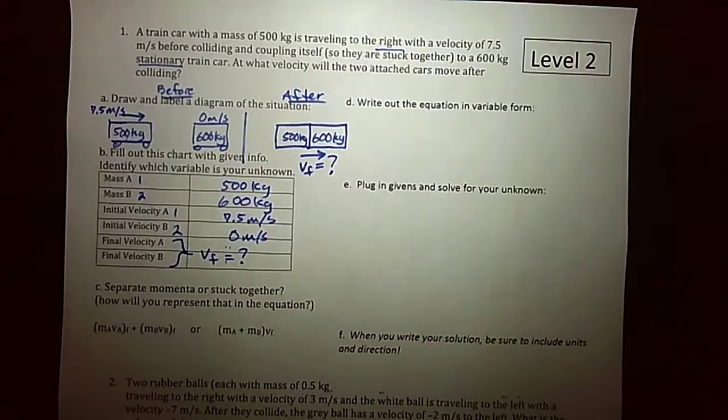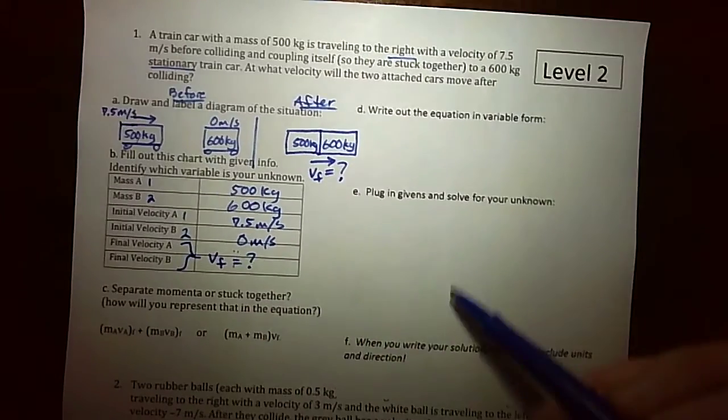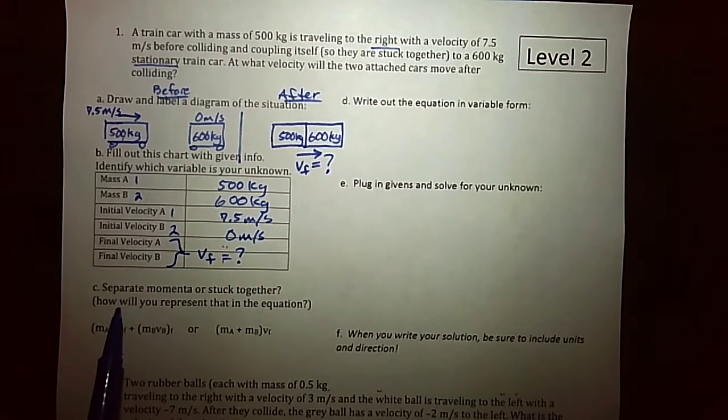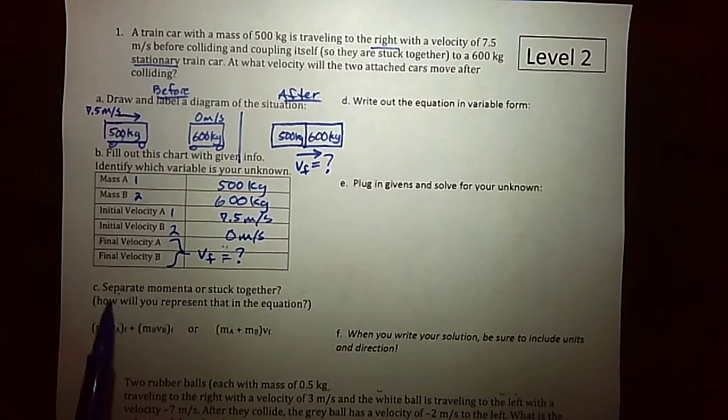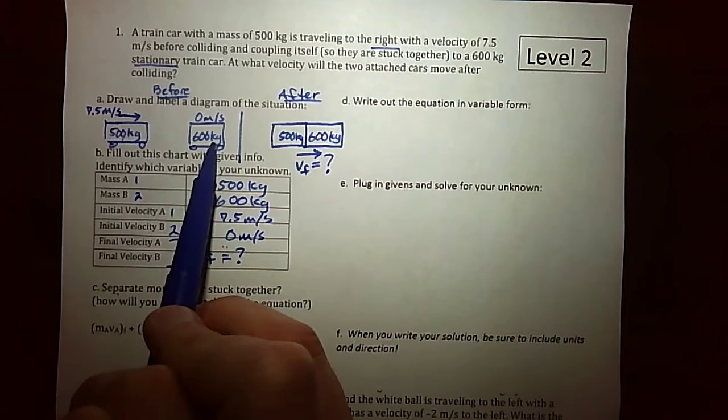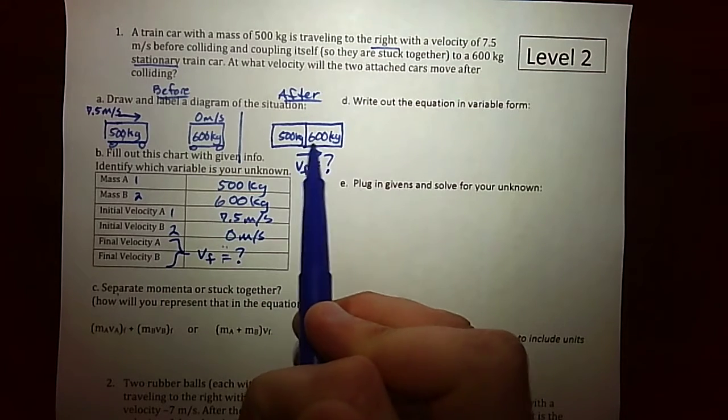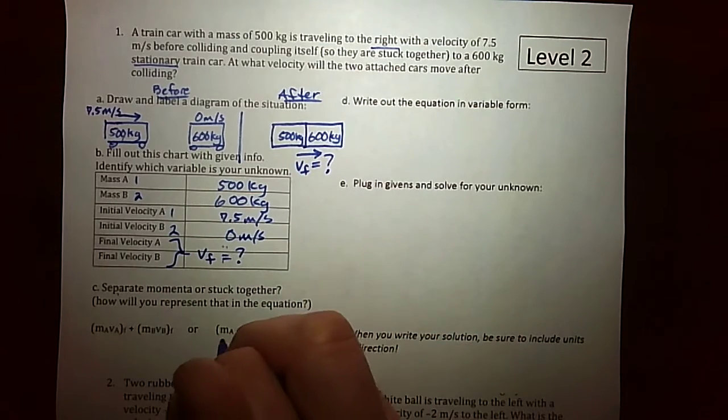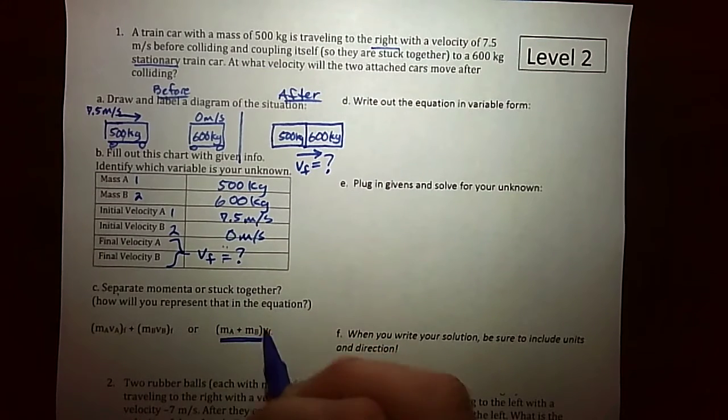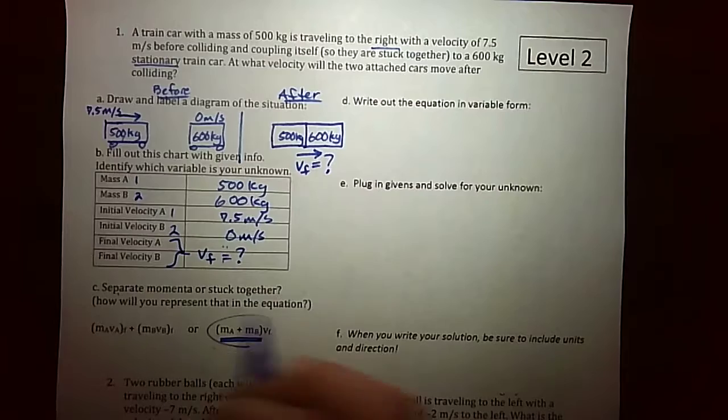Now we're going to use this diagram to build an equation to eventually solve for this final velocity. Something I want to be aware of is, are they either separate momentum or stuck together at any point? So how will you represent this in the equation? So here they're separate, but since this is an inelastic collision where they're stuck afterwards, I'm going to definitely incorporate this somewhere in my equation where my masses are together and they have the same velocity.